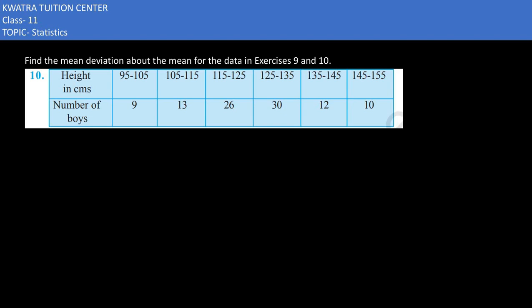Here in this case you need to find the mean deviation about the mean. Now what we have given here is the x value, and we have the number of boys, which is the frequency. So what will be our first table in this situation? First of all, it will be group data.